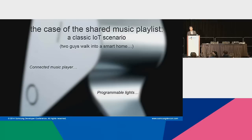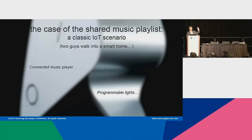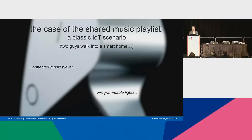Let's make this more concrete with a scenario. A lot of people like to think about music and shared playlists. Wouldn't it be great if two guys walk into a smart home — one of them lives there, one is a friend — and in the living room there's a connected music player and some cool programmable lights that can set the mood? Wouldn't it be reasonable to imagine that when these guys come in, their shared preferences are communicated to the music player, it figures out a great playlist automatically, music plays, and the lights do cool synchronized things customized to the colors the two guys like?